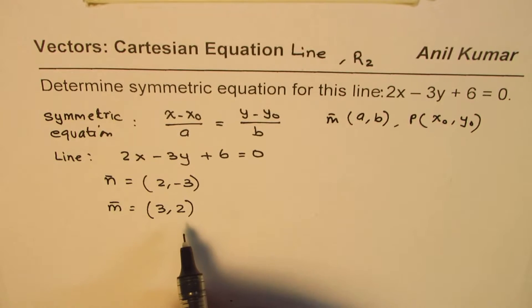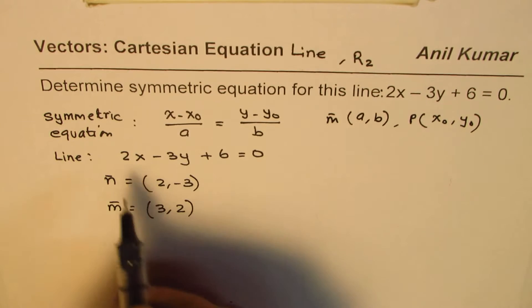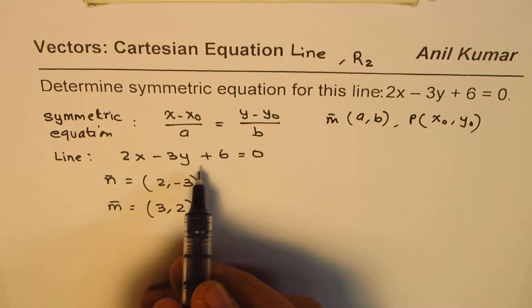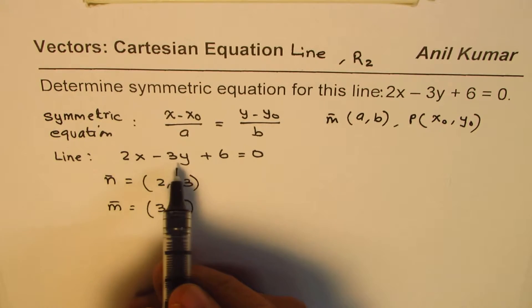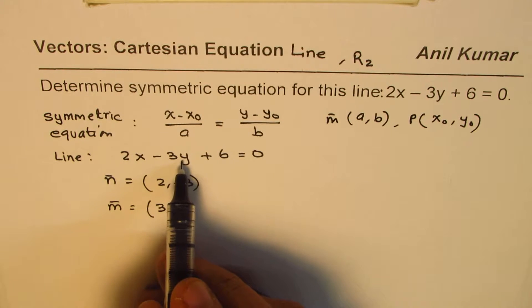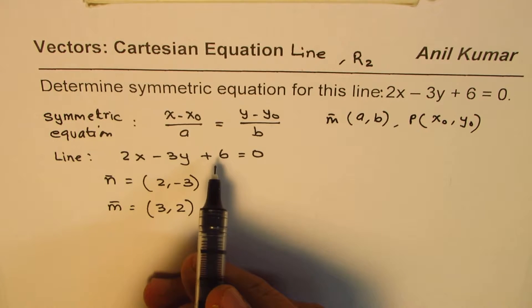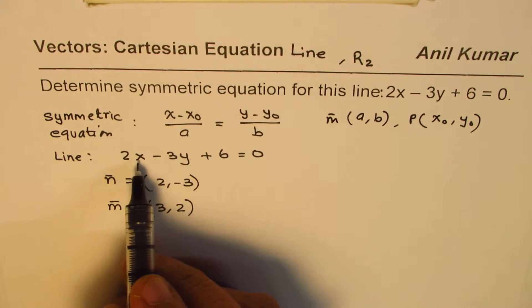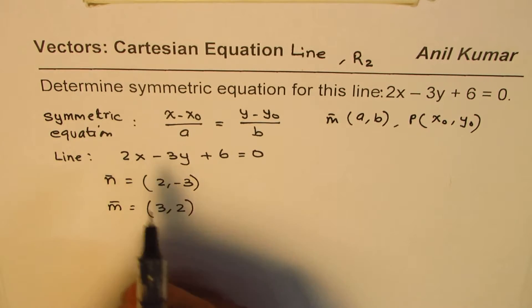Now, the second part is to find a point. How do we find a point? Well, to find a point, you can substitute any value of x and find the value of y. So, that could be one way of doing it. So, let me take x as, for example, 0.